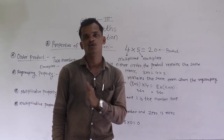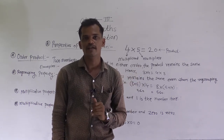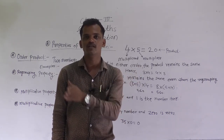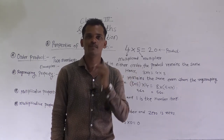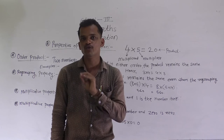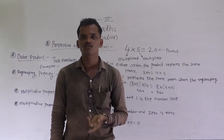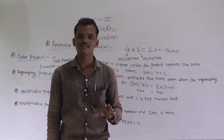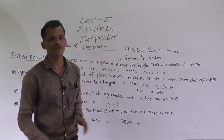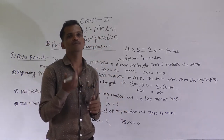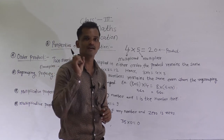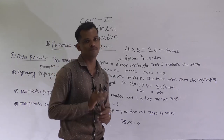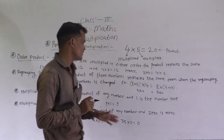9 into 1 is equal to 9. 10 into 1 is equal to 10. 15 into 1 is equal to 15. Any number multiplied by 1, the product will become that same number.